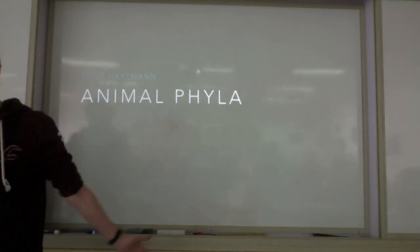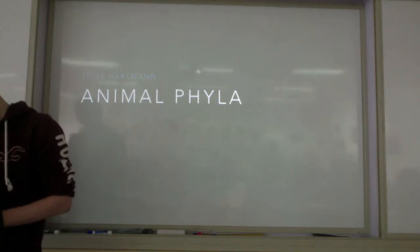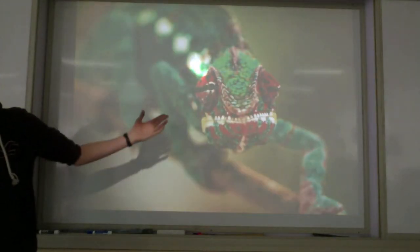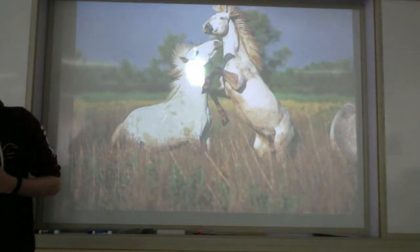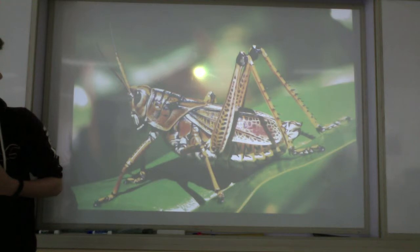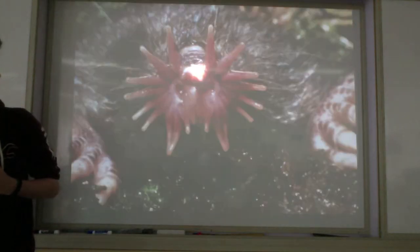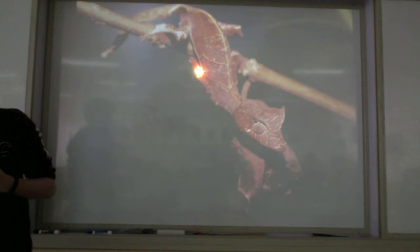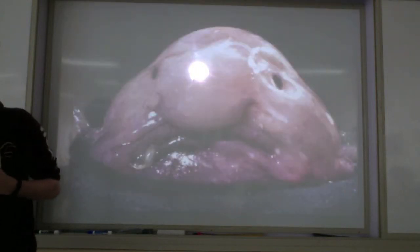As we all know, there are many different kinds of animals in our world and they range from awesome animals like meerkats, horses, grasshoppers, and owls, to rather weird animals like the star-nosed mole and the blobfish.